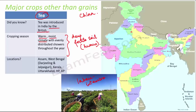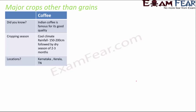Tea is grown in specific regions of West Bengal like Darjeeling and Jalpaiguri, as well as Assam, Kerala, Uttarakhand, and Himachal Pradesh. Tea is generally grown in slightly hilly areas because those regions receive showers throughout the year, which is exactly what tea plantations require.